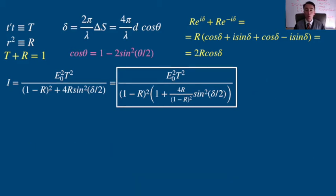In the case where there are no losses, that means all light is either transmitted or reflected, there is no absorption of light in the medium, then we have that T plus R is 1. This is the ideal situation, but sometimes it is not the real situation. Then it all simplifies.